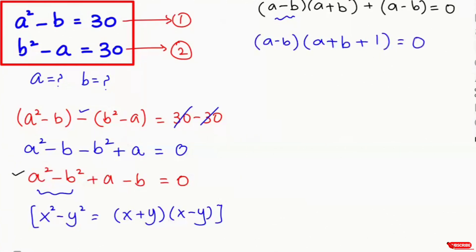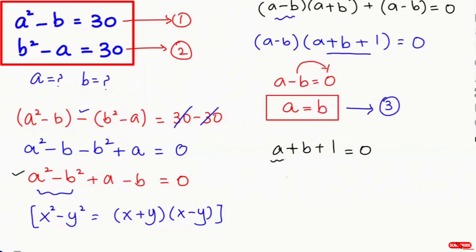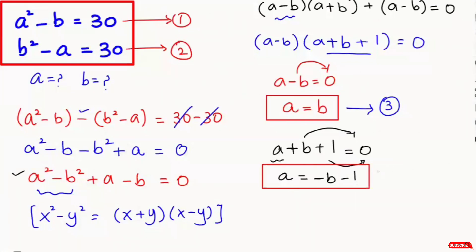Now we get two cases. Case 1: a minus b equals 0, so a equals b. This is equation 3. Case 2: a plus b plus 1 equals 0. Making a the subject, a equals minus b minus 1. This is equation 4.